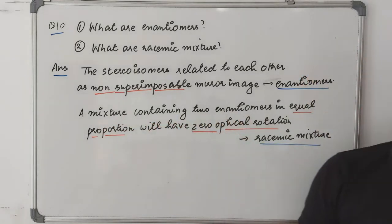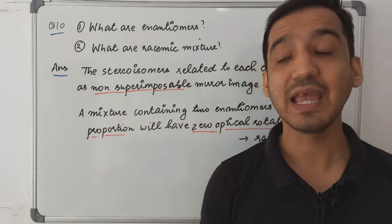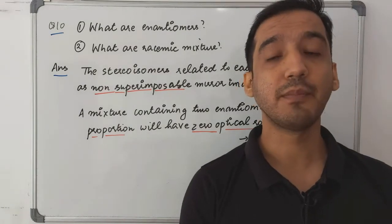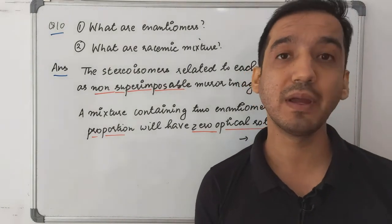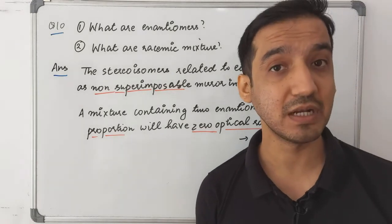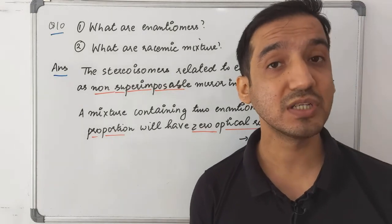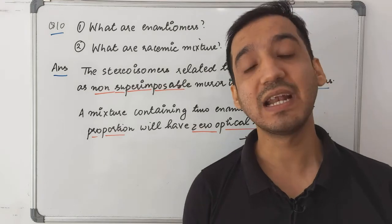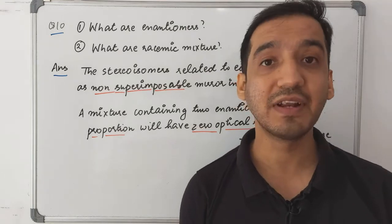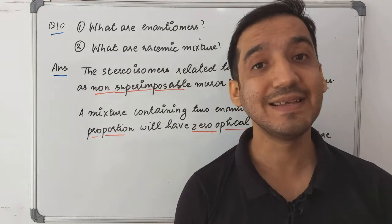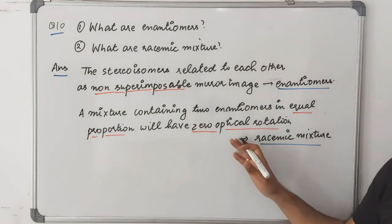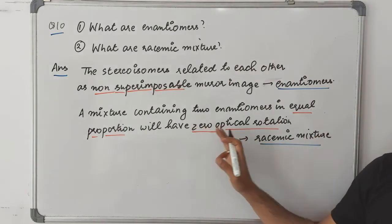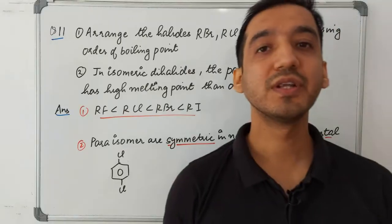A racemic mixture is a mixture containing two enantiomers in equal proportion — 50% dextro form and 50% levo form. The dextro form tries to rotate light to the right and the levo form to the left; they cancel each other's optical rotation. So the racemic mixture has zero optical rotation.